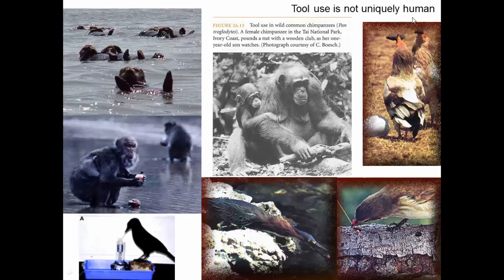Tool use, interestingly, is not uniquely human. For much of history we thought tool use distinguished us from animals, but there are many examples: otters use rocks to break open clams, macaques wash their potatoes in water, crows can create and bend wire into tools to solve puzzles, and chimpanzees use sticks to break open nuts — with babies watching their mothers to learn the technique.